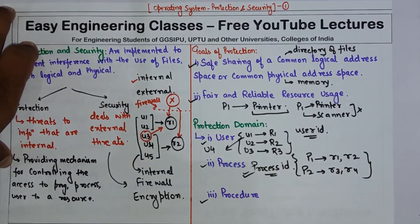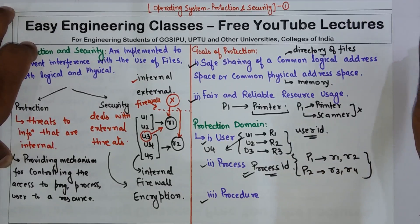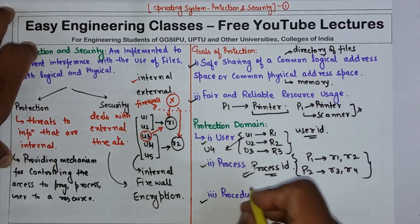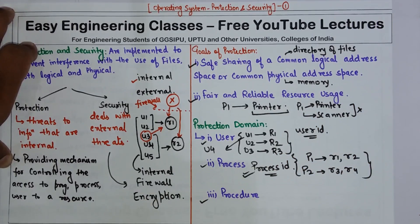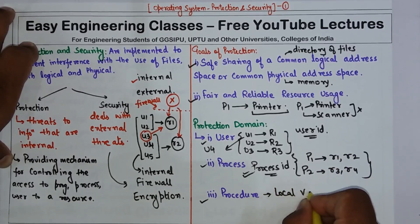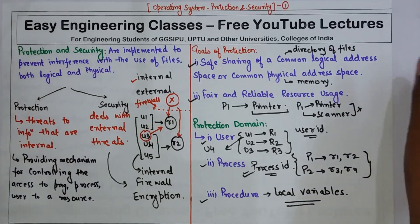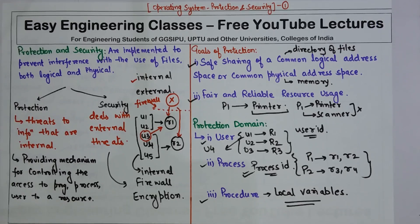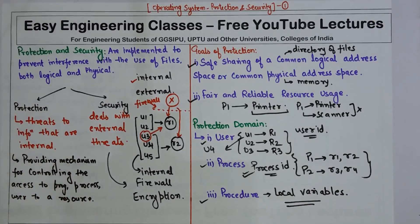In the same manner, a procedure can also be used as a domain. In this case, the set of objects that can be accessed corresponds to the local variables defined within that procedure. The local variables are used to define the domain of the resource that can be used with that procedure. This is a brief overview of protection and security, the goals of protection, and the protection domain. In the next video we are going to see the access matrix, which is the most important point of this topic. Thank you for watching — please subscribe to my YouTube channel for more tutorials.